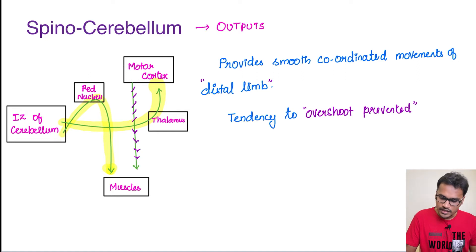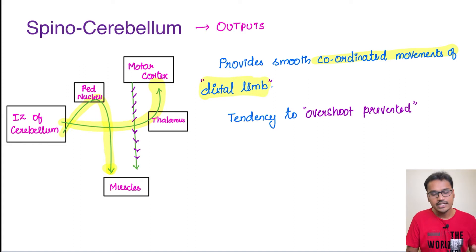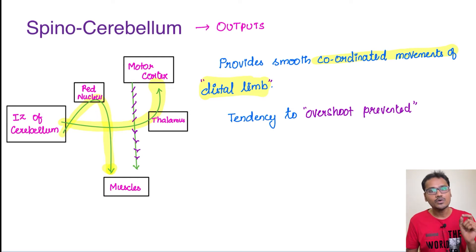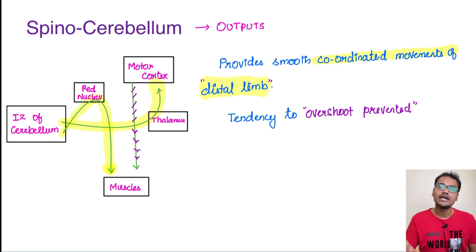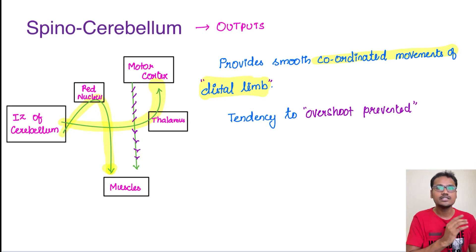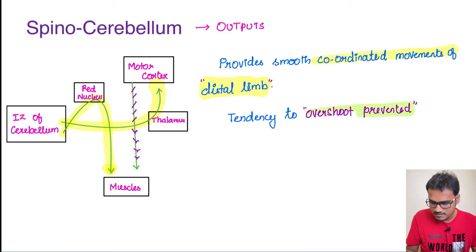The spinocerebellum provides smooth coordination of movements of the distal limb — because the intermediate zone controls the distal limbs via a small homunculus — and it prevents the tendency to overshoot. Overshoot is when a person tries to do some work and goes beyond the target, for example, trying to touch the nose but going past it. This phenomenon is called overshoot and can be prevented with the help of the spinocerebellum.